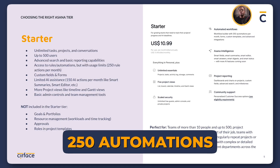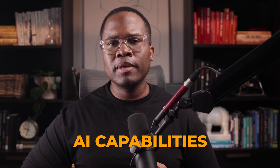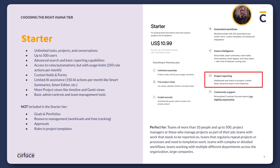On the Starter plan, you'll have access to up to 250 automations per month. There are different levels of AI capabilities with caps at each tier. You also get access to dashboards for the first time, advanced search within Asana, and custom project templates, so you can create recurring projects really easily.